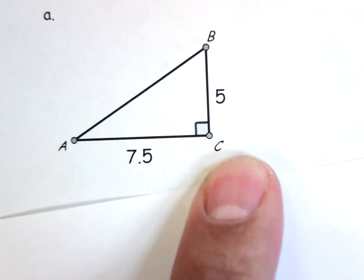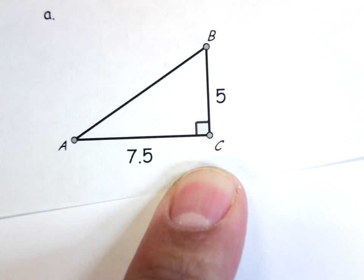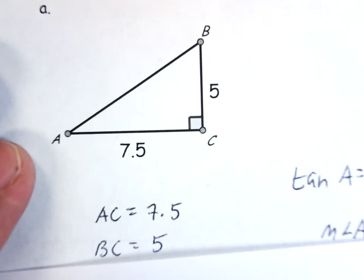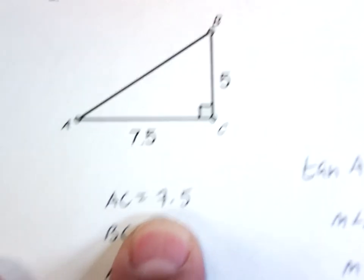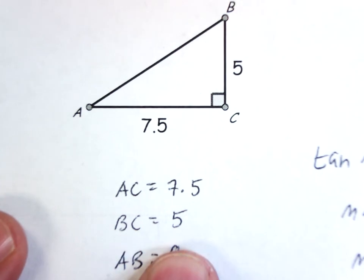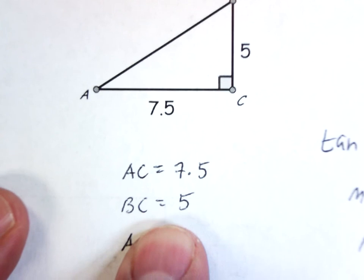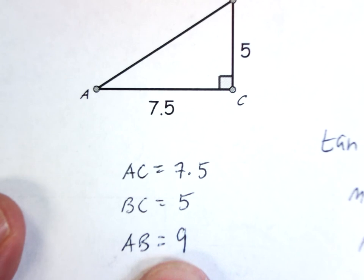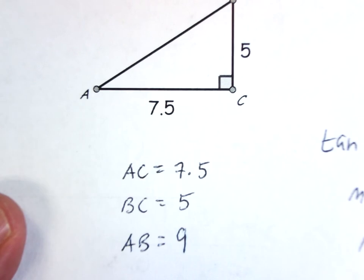I already have side length BC and side length AC. The easiest way to get side AB is just to use the Pythagorean theorem: A² + B² = C². AC is 7.5 and BC is 5. So 7.5² + 5² and find the square root gives AB = 9. That's just Pythagorean theorem — if I know two sides of a right triangle, I can always get the third side.